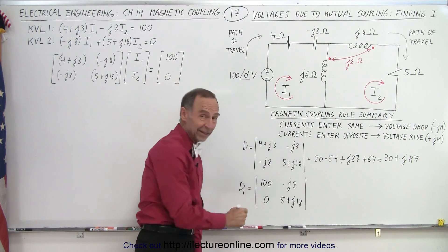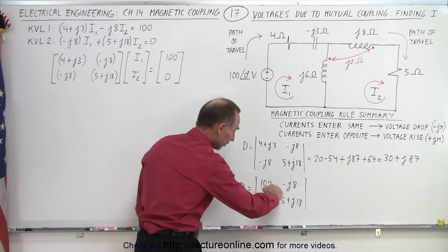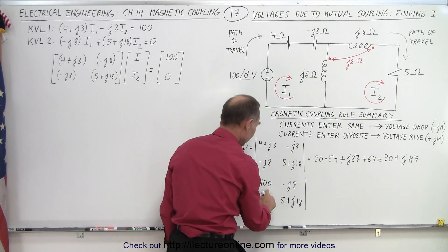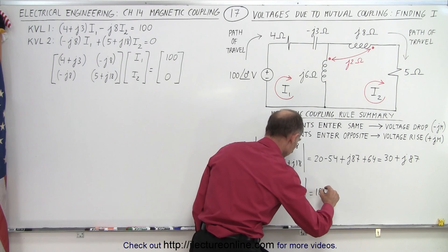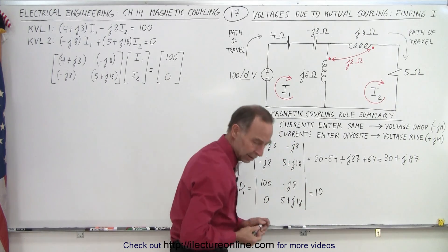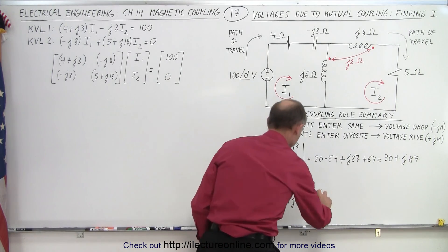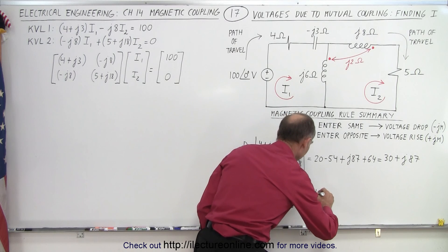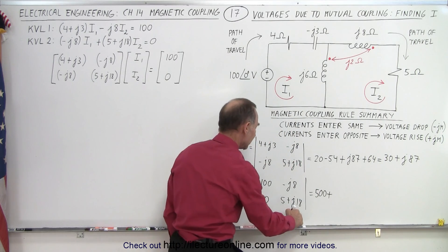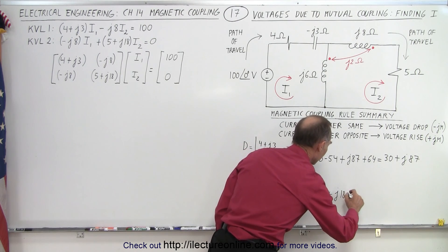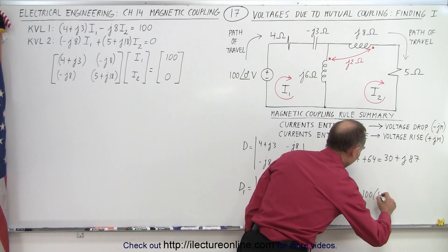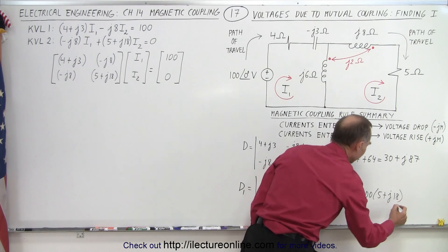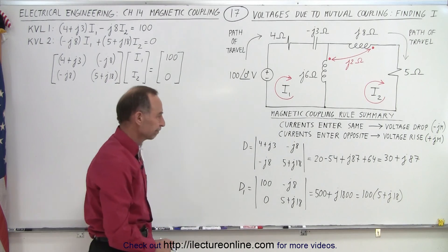Since we have that 0 in there, at least we don't have to worry about this product, so only about this product. So we end up with 100 times 5 and 100 times J18. So this becomes 100 times 5, that would be 500, plus 100 times 18, that would be J1800. Now it might behoove us to simply write it as 100 times 5 plus J18. We'll see later how that works out.